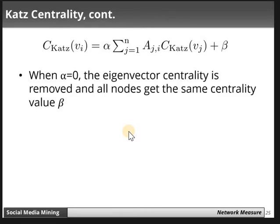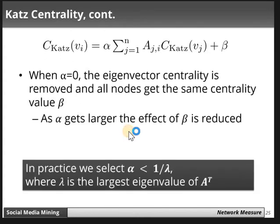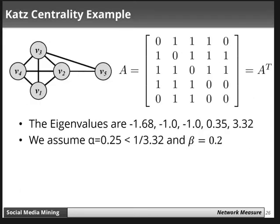When alpha is zero, the eigenvector centrality component is removed and all nodes get the same centrality value, beta. As alpha gets larger, the effect of beta is reduced. In practice, we select alpha as 1/lambda, where lambda is the largest eigenvalue of the adjacency matrix. This is the correct choice for alpha, because choosing a larger alpha would reduce the effect of beta.